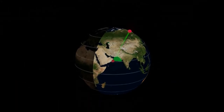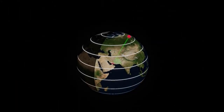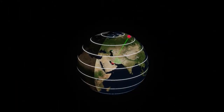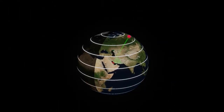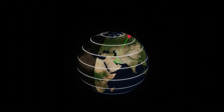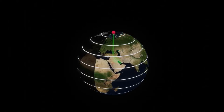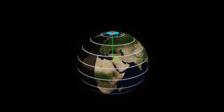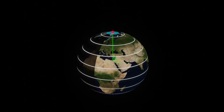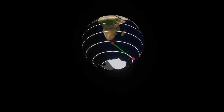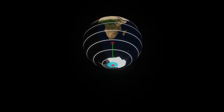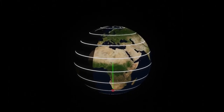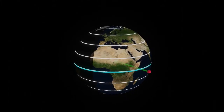If we plot curves of constant latitude angles, we will get horizontal circles. At the north pole, the latitude angle is 90°; at the south pole, the latitude angle is −90°; and it is zero at the equator.